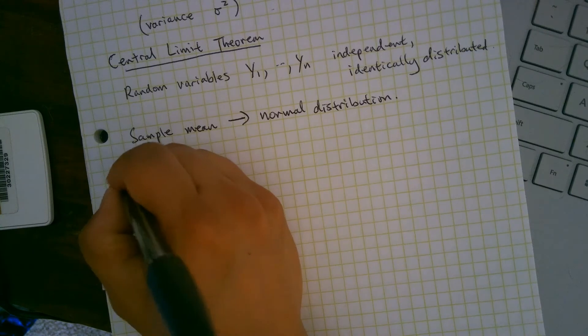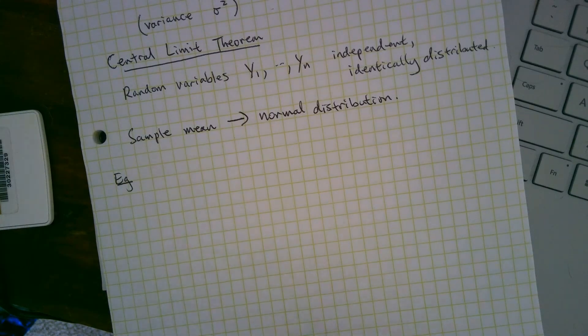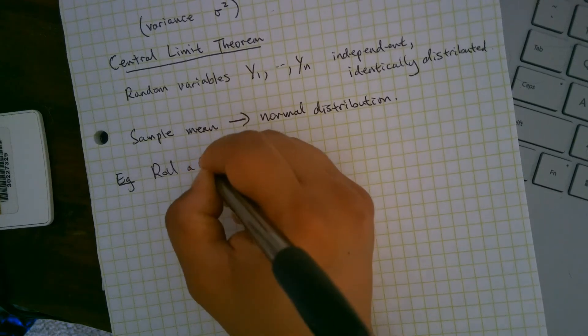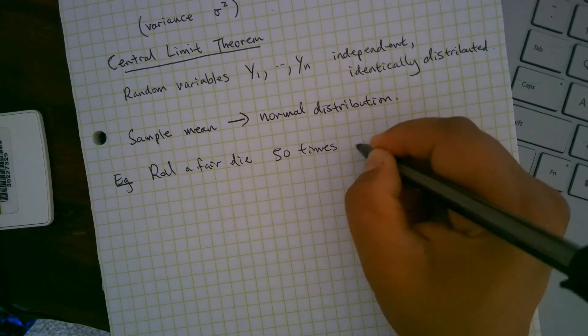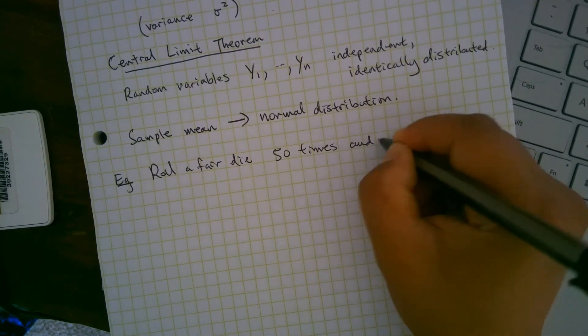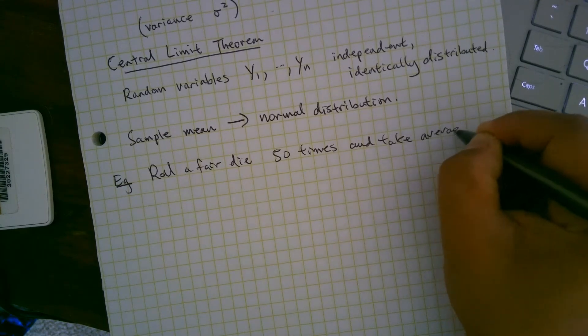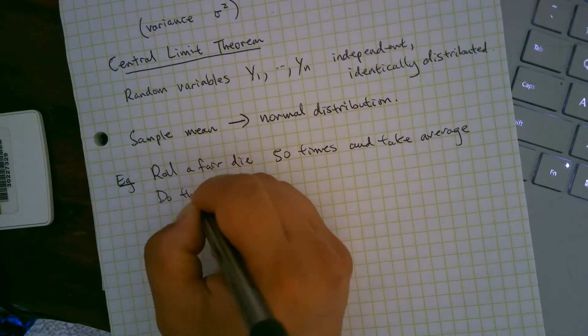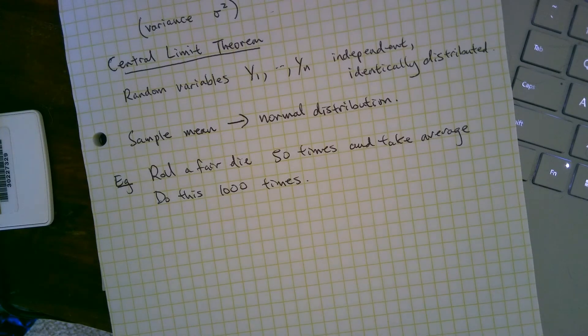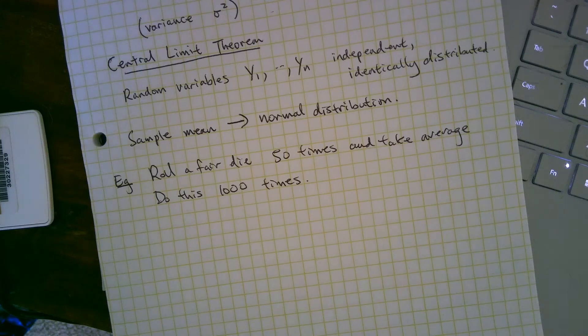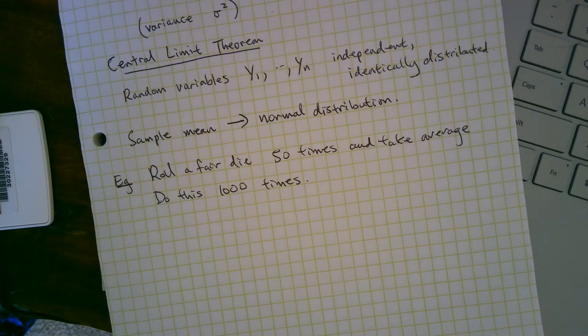So what does that mean? Let's look at an example. We're going to roll a fair die 50 times. And then keep track of the average. And then we're going to do this 1000 times. So that's a total of 50,000 rolls. 50 times, take the average, restart. 50 times again, take the average, restart. We're rolling the die 50,000 times. And then you might get a graph. Let me pull up this graph. Hold on. Okay. You might get a graph.